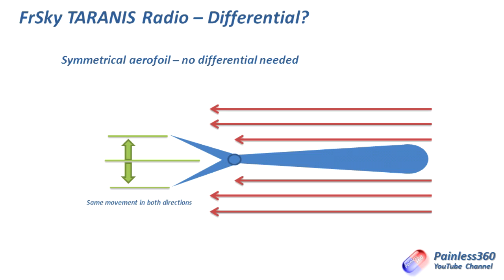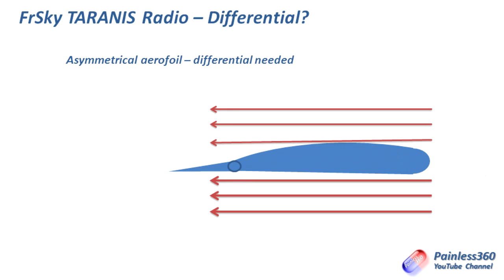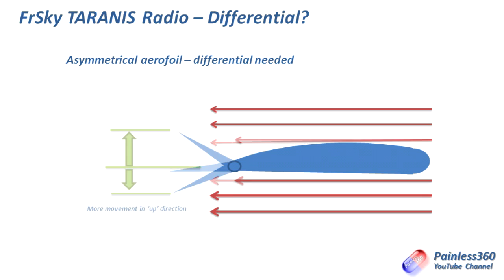However, if you have an asymmetrical wing, what you'll find is that because of the way the wing works — it's actually creating lift by creating a low pressure area above itself and a higher pressure area below in comparison — the aerofoil actually causes some weird effects at the back. The control surface actually has to move more into the lower pressure air to get the same amount of control. So this is what differential is all about helping us set up.